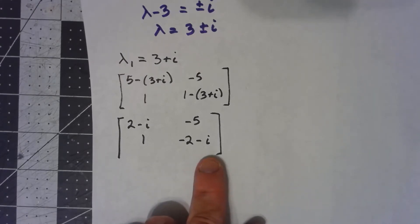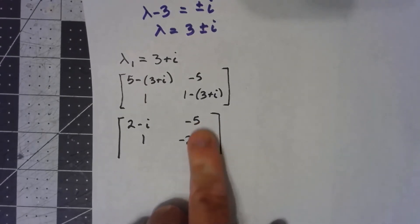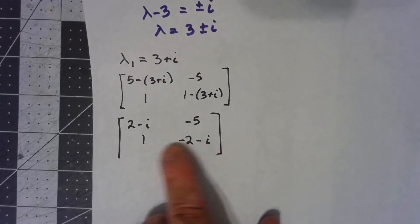If I take this bottom row and multiply it by 2 minus i, I actually just get the first row.